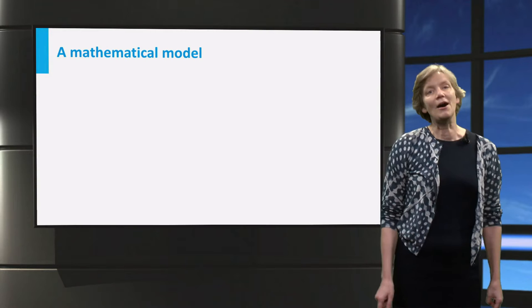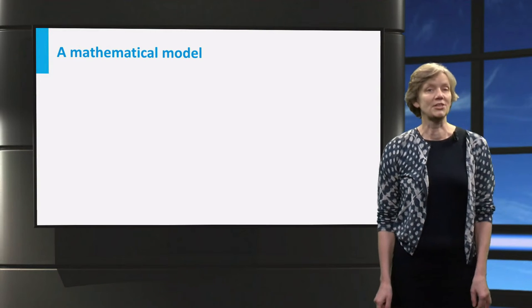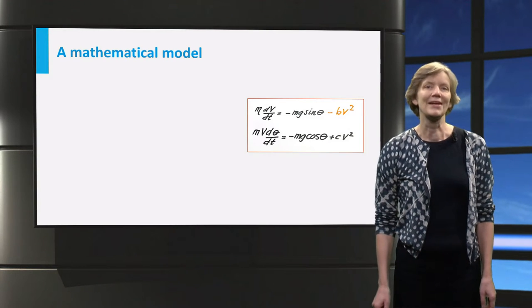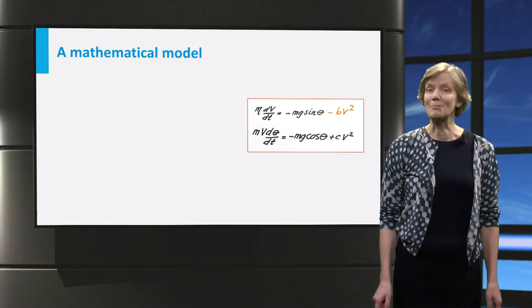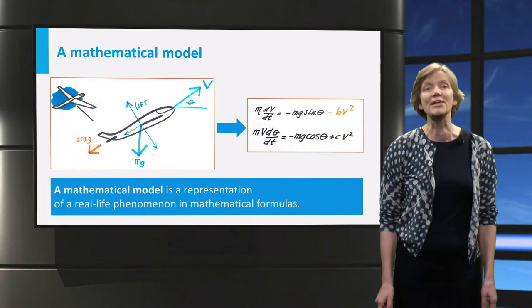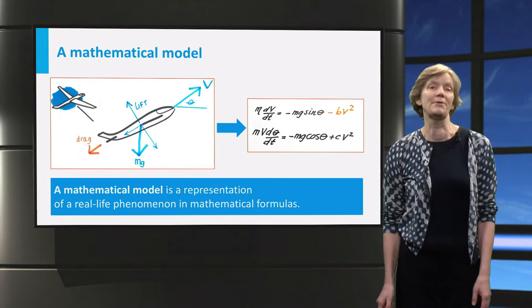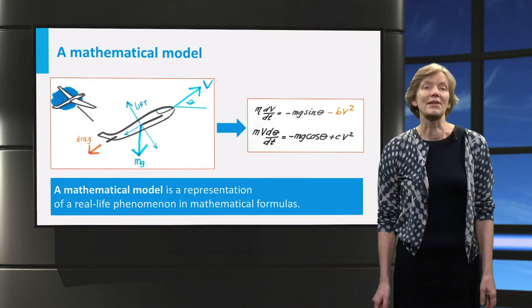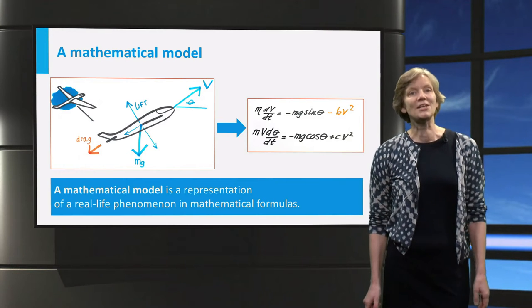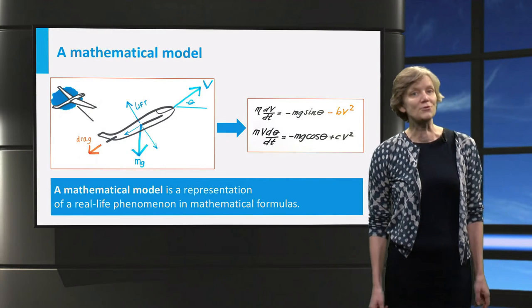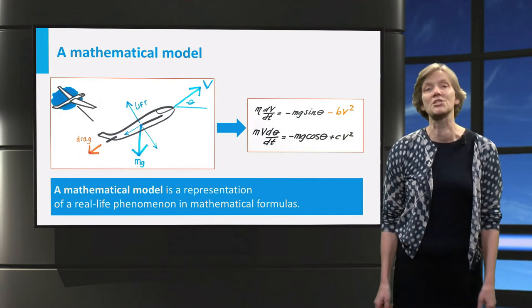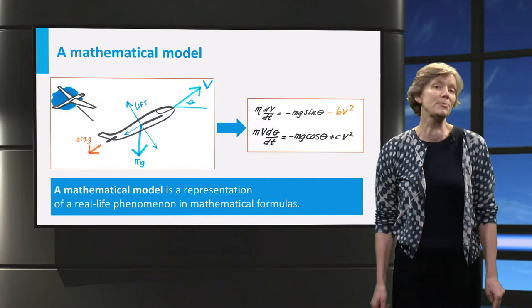A mathematical model, however, is not tangible — it is theoretical. A mathematical model is a representation of a real-life phenomenon in mathematical formulas. The formulas are then solved to simulate the phenomenon in theory, for example, on a computer.